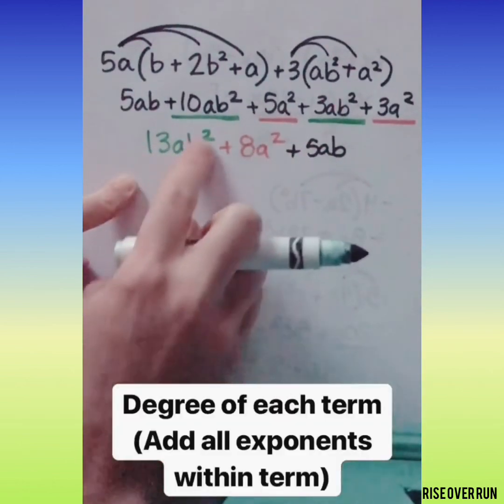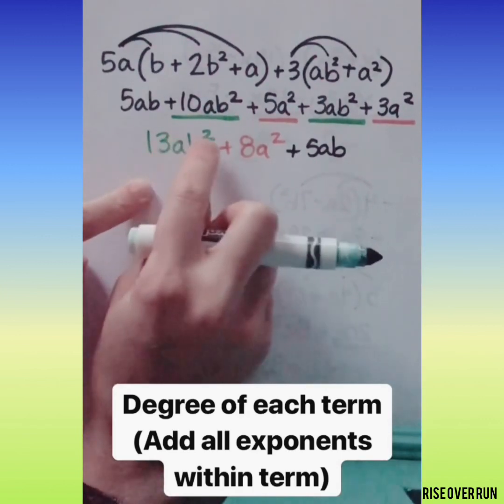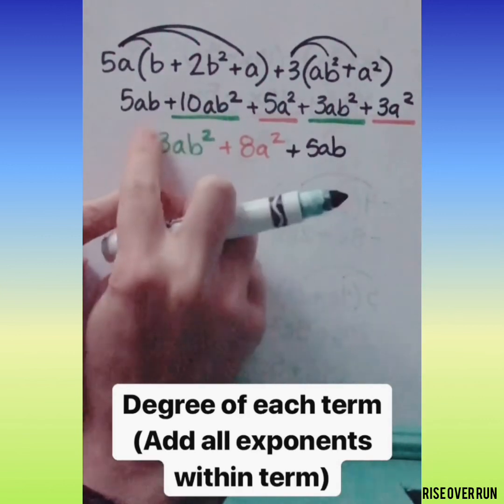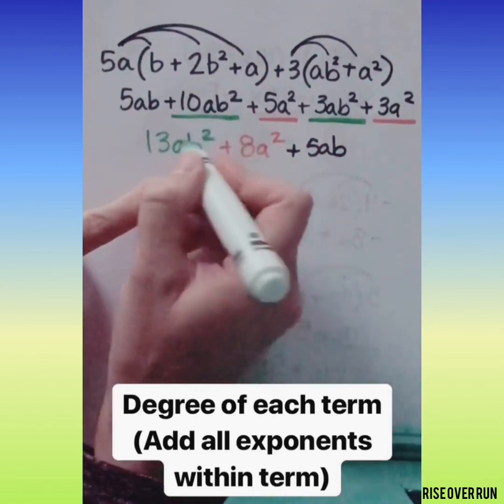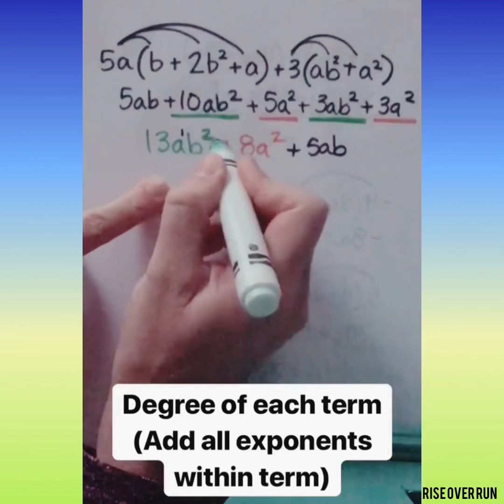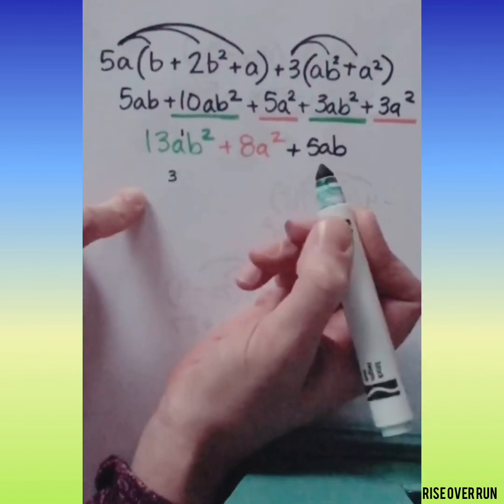Now when you go to put this in standard form, note that we have two different variables going on so you want to figure out the degree of each term. The degree means you add all the exponents involved in the term. So if I want to know the degree of this term, a has an exponent of 1 and b has an exponent of 2 so that term has a degree of 3.